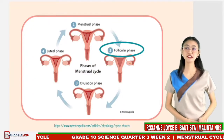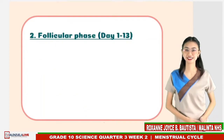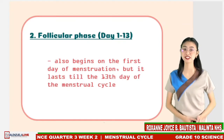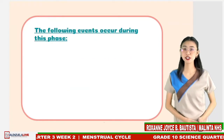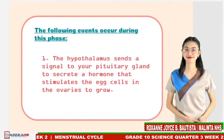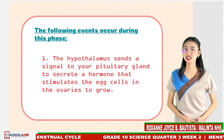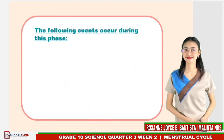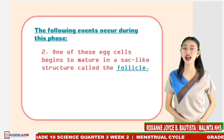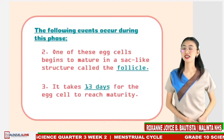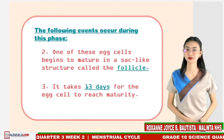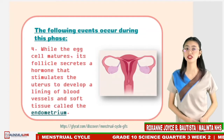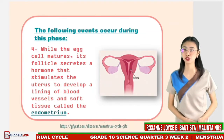Let us now proceed to the second phase, which is known as the follicular phase. This phase also begins on the first day of menstruation, but it lasts to the 13th day of the menstrual cycle. It starts when the hypothalamus sends a signal to your pituitary gland to secrete a hormone that stimulates the egg cell in the ovaries to grow. One of these egg cells begins to mature in a sac-like structure called a follicle. It takes 13 days for the egg cell to reach maturity. While the egg matures, its follicle secretes a hormone that stimulates the uterus to develop a lining of blood vessels and soft tissue called the endometrium.